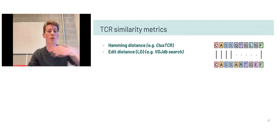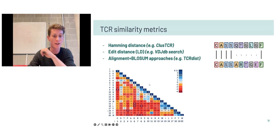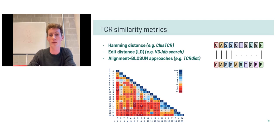What these metrics do not capture is the nuance in amino acid substitutions — going from leucine to isoleucine is not as big a difference as leucine to glycine. For proteins, this information is encoded in substitution matrices like the BLOSUM or PAM matrices. Some TCR distance metrics incorporate this BLOSUM information to define TCR similarity, with key examples including TCRdist, and similar approaches used by iSMART and GIANA.